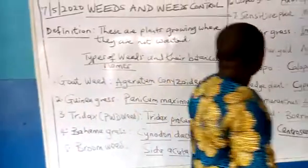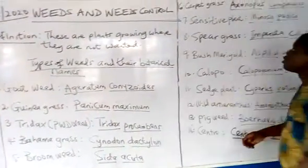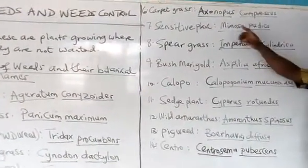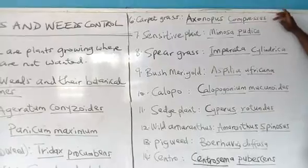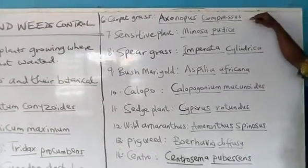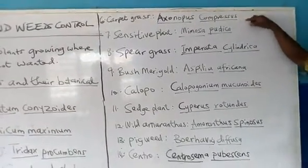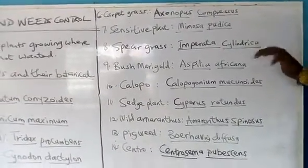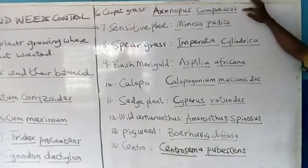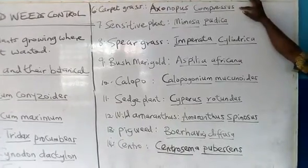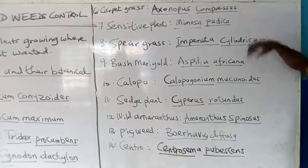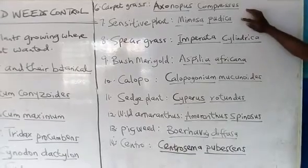Up here we have what we call Carpet grass, whose botanical name is Axonopus compressus. This carpet grass is a kind of grass you mostly find growing everywhere, and it is mostly used in fields where football is being played.